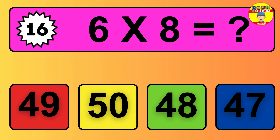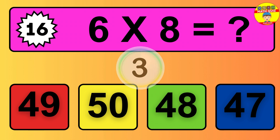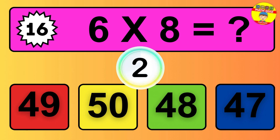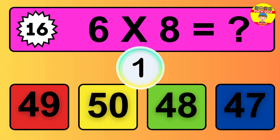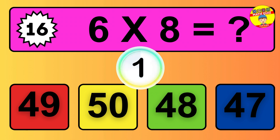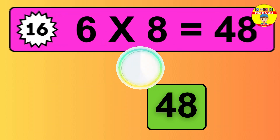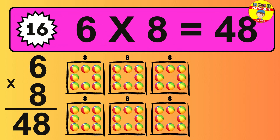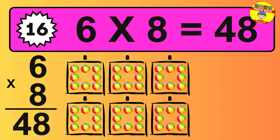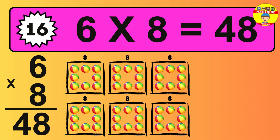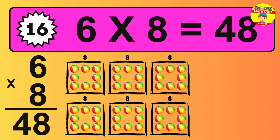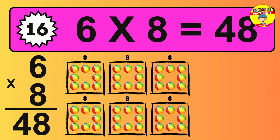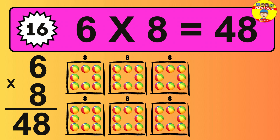Question 16. 6 times 8 equals what? The answer is 6 times 8 is 48. To calculate, we have 6 groups with 8 balls each one. So how many balls do we have? 48 balls.